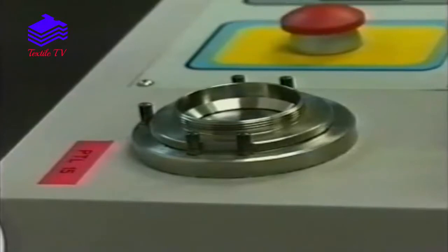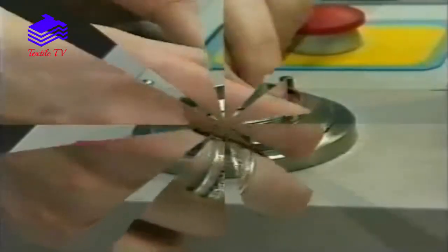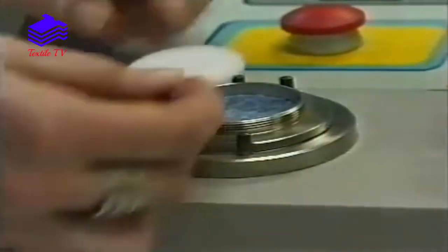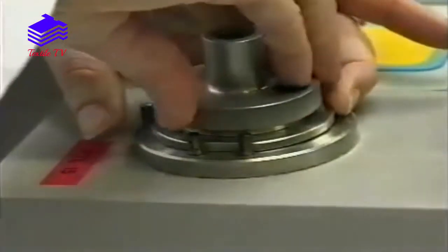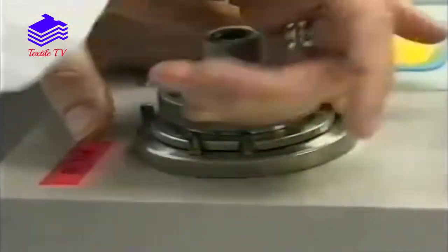These specimens are mounted in the top holders of the Martindale tester. Firstly the specimen is placed in the holder. A circular piece of foam is placed on top and the metal insert is screwed in place using the jig provided on the tester.